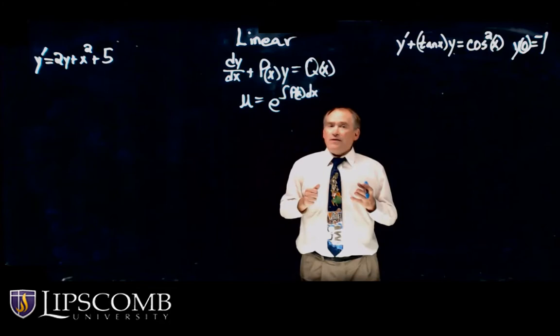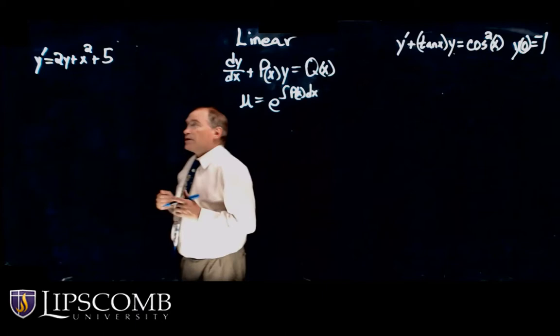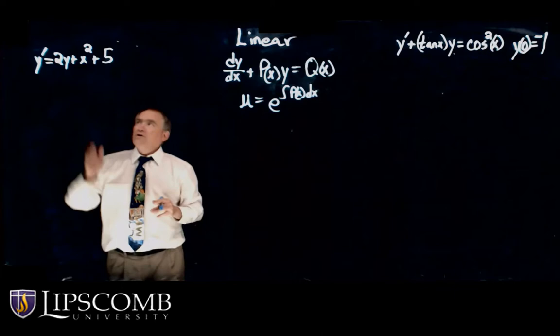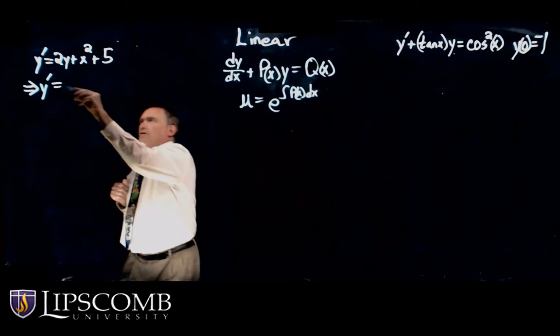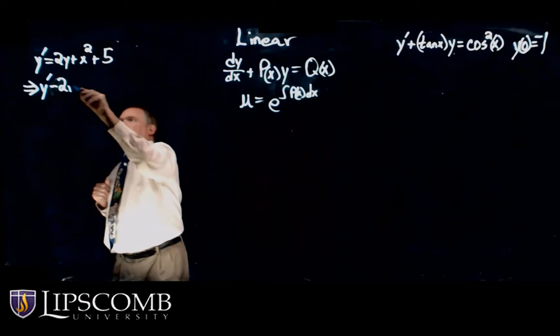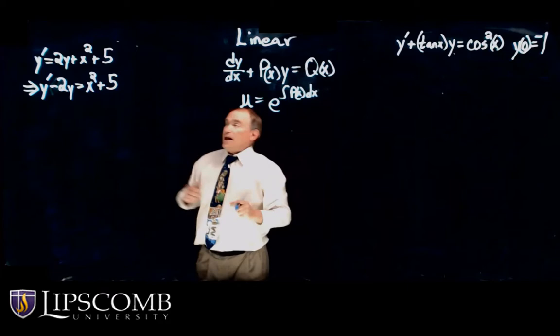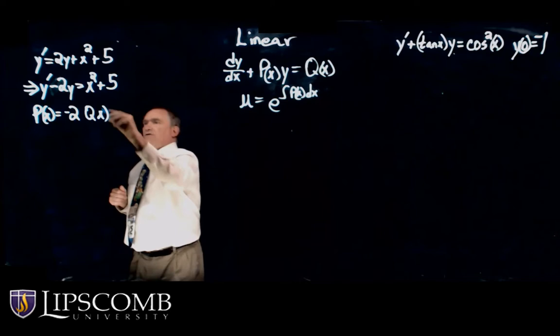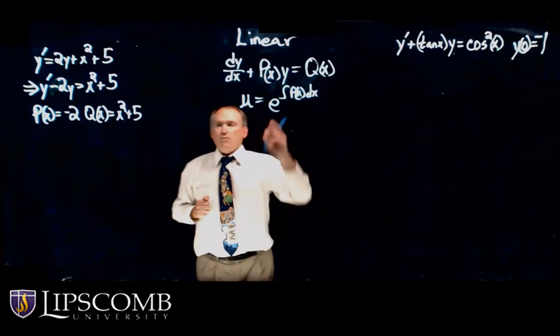That way, we have a total differential on one side. Here's my first example: y prime equals 2y plus x squared plus 5. The first thing I've got to do is get it in this form. So let's move it — y prime minus 2y equals x squared plus 5. Now I have it in that form. My P(x) is negative 2, and my Q(x) is x squared plus 5.